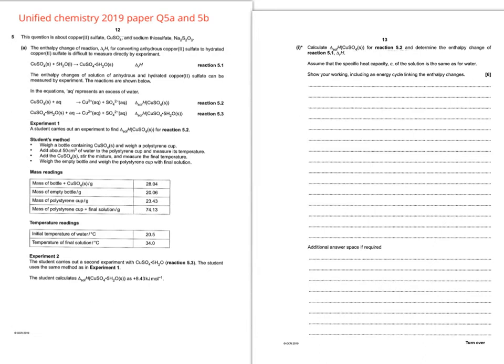Hello and welcome to this clip going through question 5a and 5b from the 2019 Unified Chemistry paper, which was also part of our college mock exam. The first part is a leveled response question, so that means it's marked on scientific points plus clarity of expression. So you've got to take a slightly different approach when you're answering this type of question.